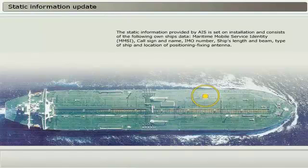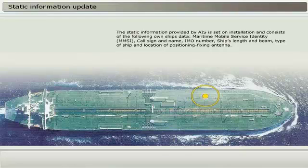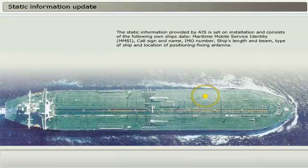The static information provided by AIS is set on installation and consists of the following own ship data: Maritime Mobile Service Identity (MMSI), call sign and name, IMO number, ship's length and beam, type of ship, and location of positioning fixing antenna.